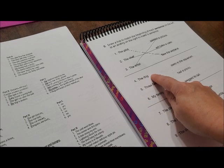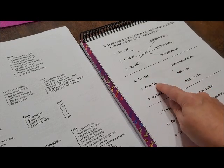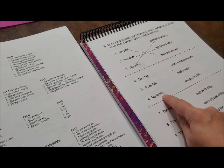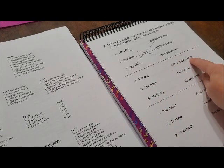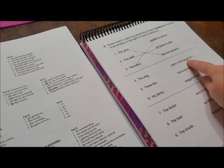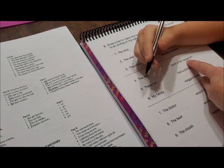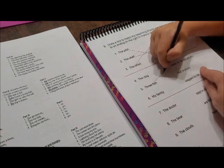Alright. This says, the dog. Three fish. My family. Swims in an aquarium. Who swims in an aquarium? The fish. The fish swim in the aquarium.